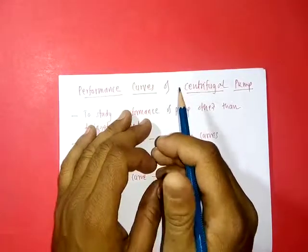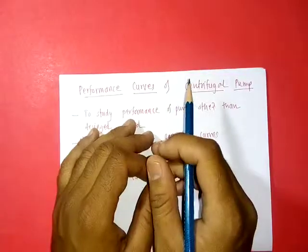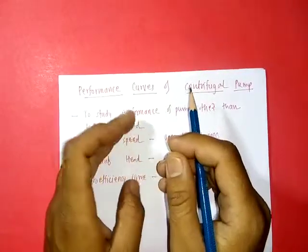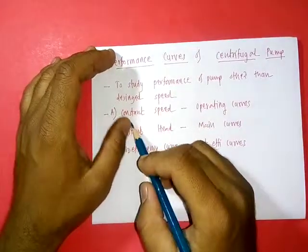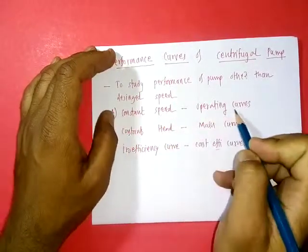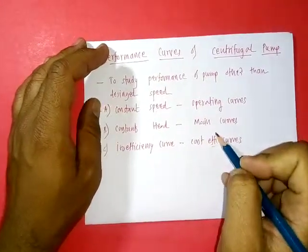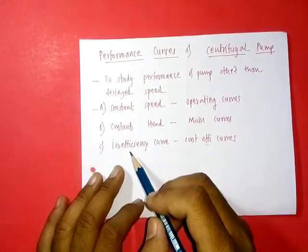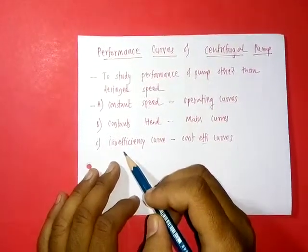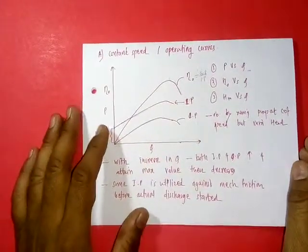Performance curves are drawn to study or to predict performance of a pump other than design conditions. In these performance curves there are two to three types: first is constant speed or operating curves, second is constant head or main curves, and lastly constant efficiency, also called isoefficiency curves.